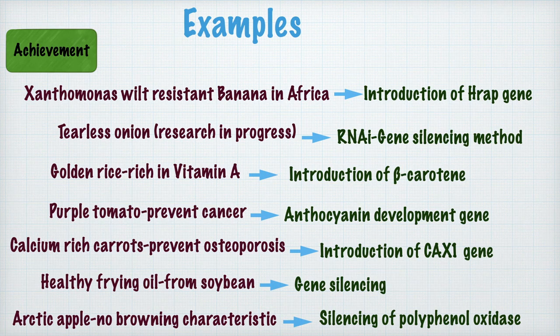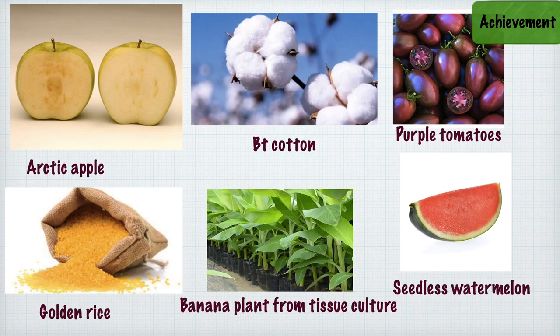Another example is the Arctic apple, which has no browning characteristics. Unlike a regular apple that turns brown when cut, the Arctic apple was developed through silencing of the polyphenol oxidase gene. Other achievements include Bt cotton, seedless watermelon, digestive bananas, and healthy seedlings through tissue culture, in addition to golden rice, Arctic apple, and purple tomatoes already mentioned.